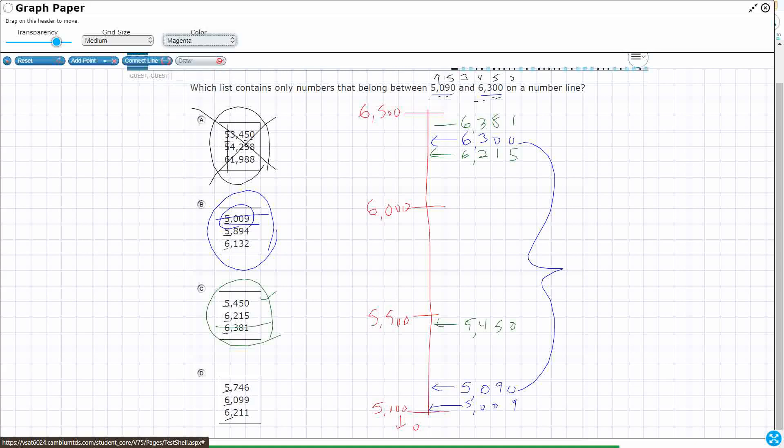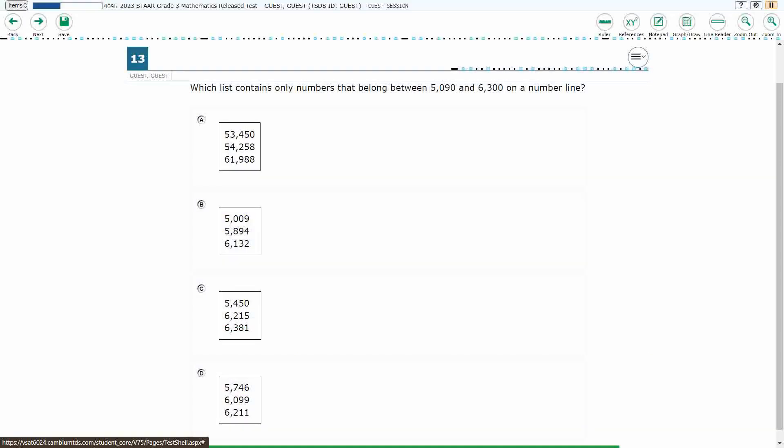So let's hope this last one works: 5,746, so right about there. 6,099, so right about there. And then 6,211. Oh, barely. Look at this one. Barely going to fit. 6,211 is going to go like right there, but it's less than 6,215. So yeah, my answer here is going to be D.